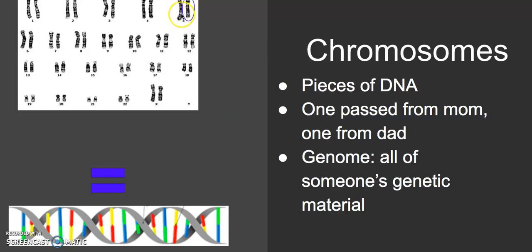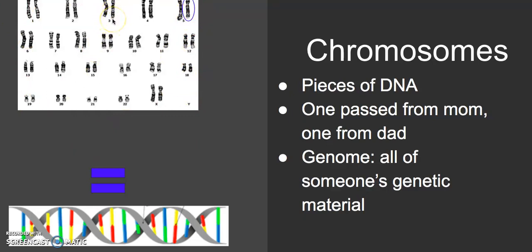Normally we think about genetics in slightly smaller sets. In the chromosome, all of the genetic material is one of these 46 sets. And DNA is the material that chromosomes are made out of.